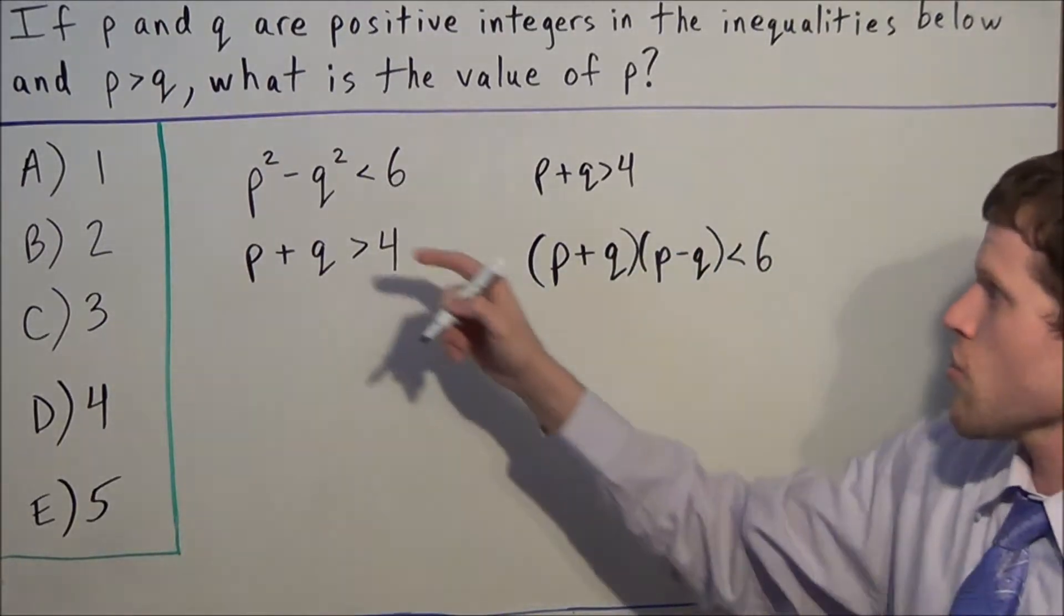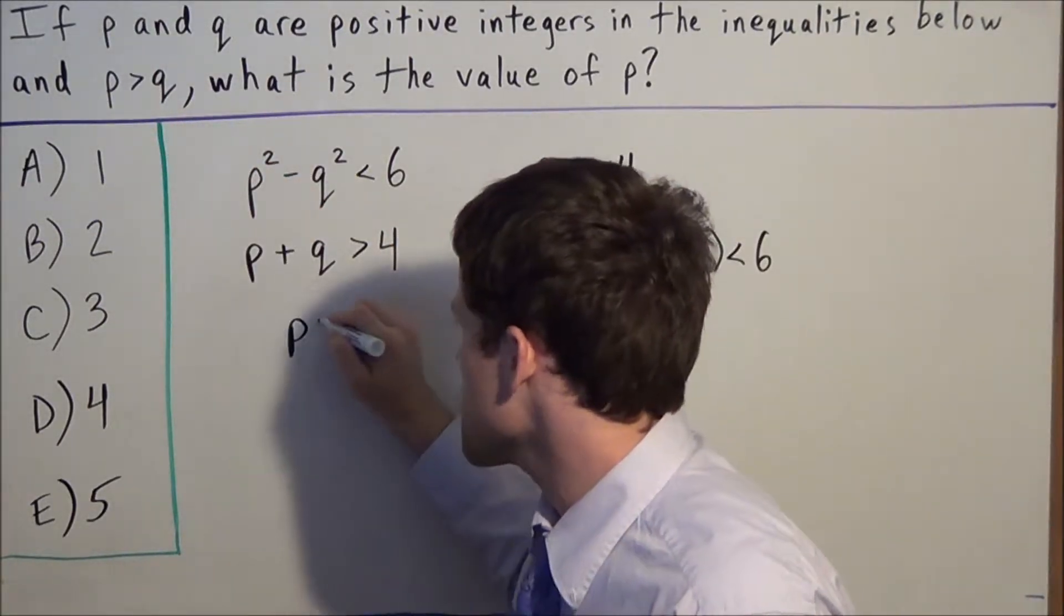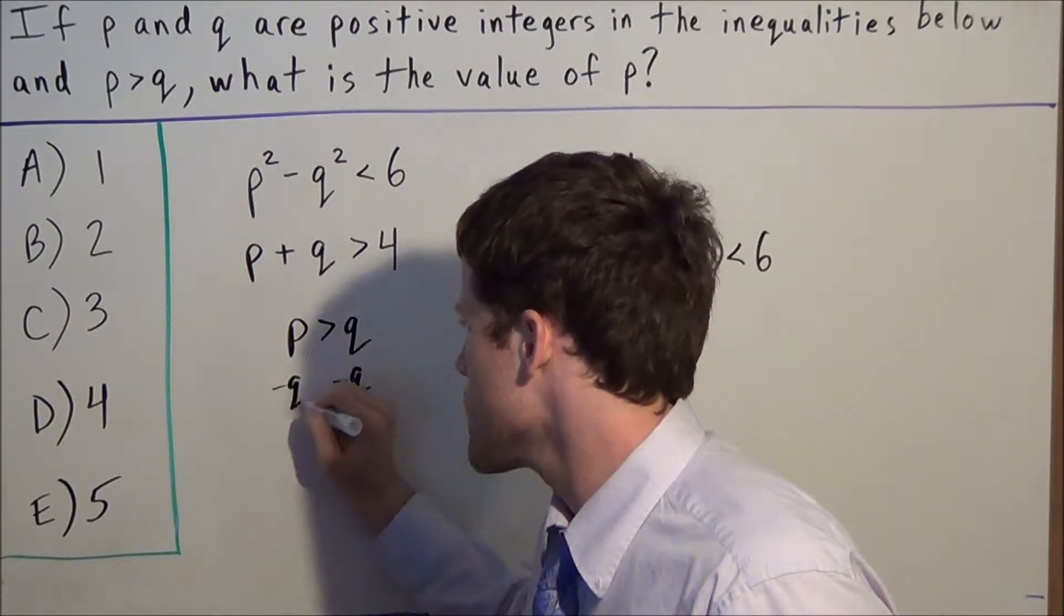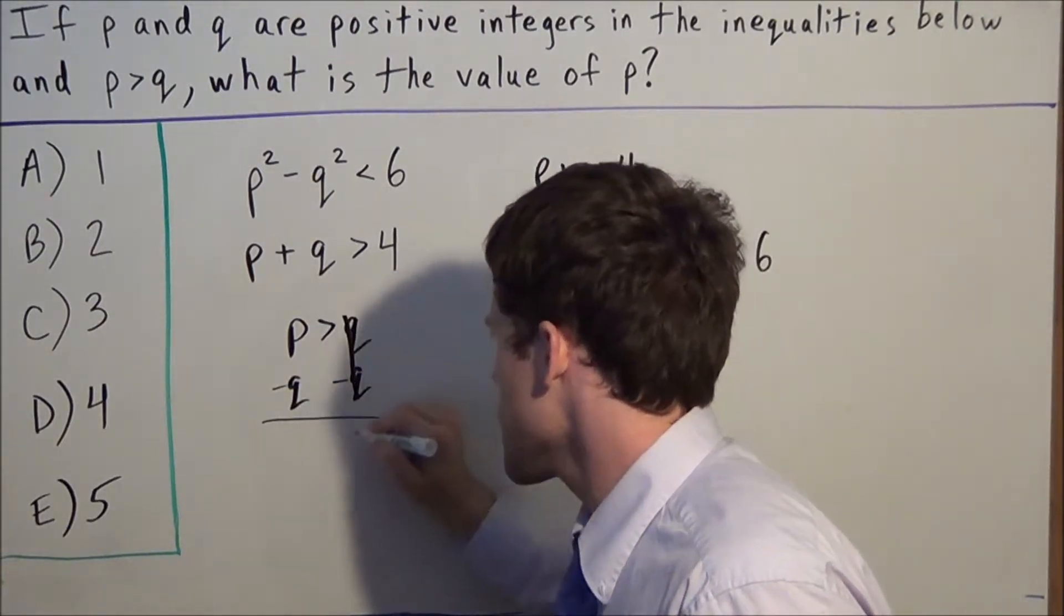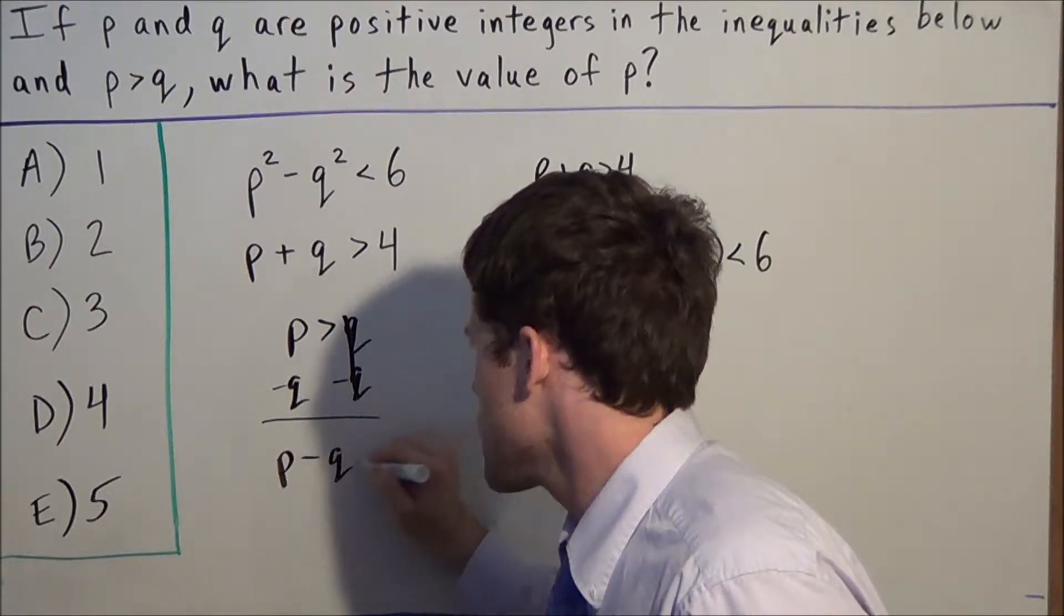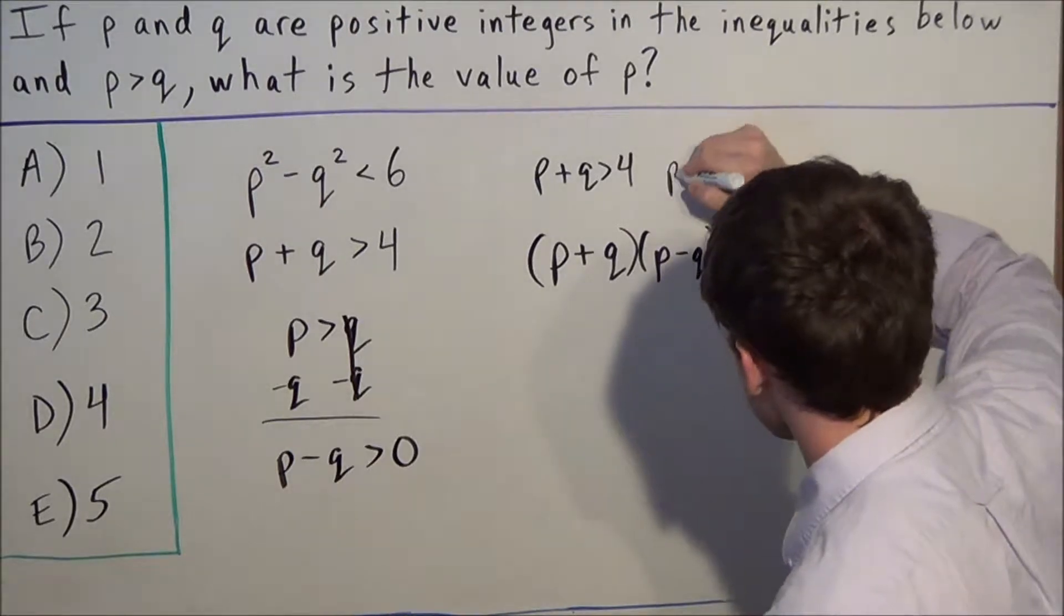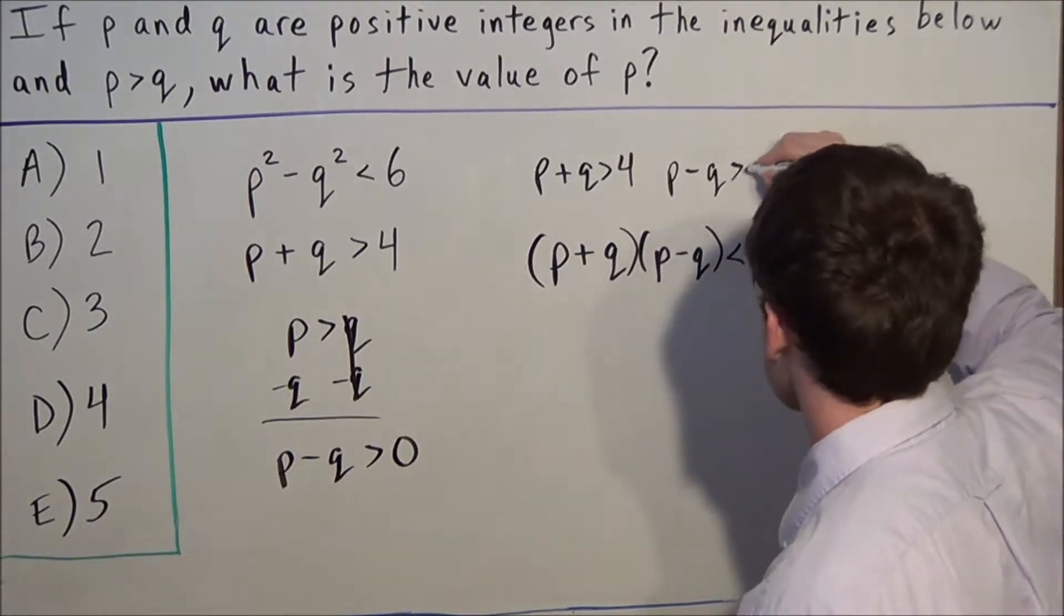Next, we should consider that p > q. If we subtract q from both sides, this gives us p - q > 0. So we can write that p - q > 0.